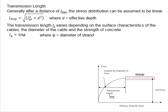The transmission length varies depending on the surface characteristics of the tendon, the diameter of the cable, and the strength of concrete. It can be simply taken as 50 times the diameter of the strand.